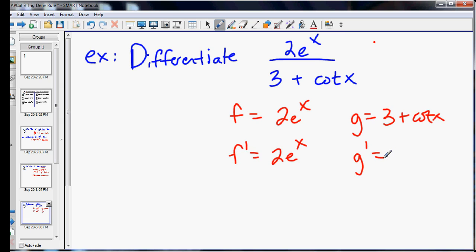g prime, the derivative of 3 is 0. The derivative of cotangent x is negative cosecant squared x.